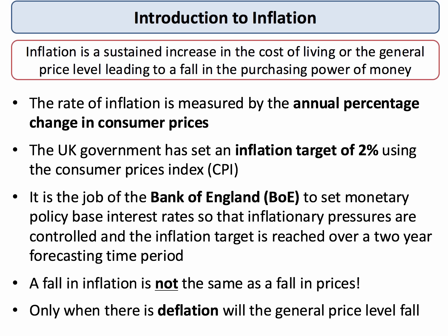The UK government has an inflation target of two percent using CPI, and it's the job of the Bank of England (BOE) to set monetary policy — base interest rates — in order that inflationary pressure is controlled and that the inflation target of two percent is reached over a two-year forecasting time horizon.